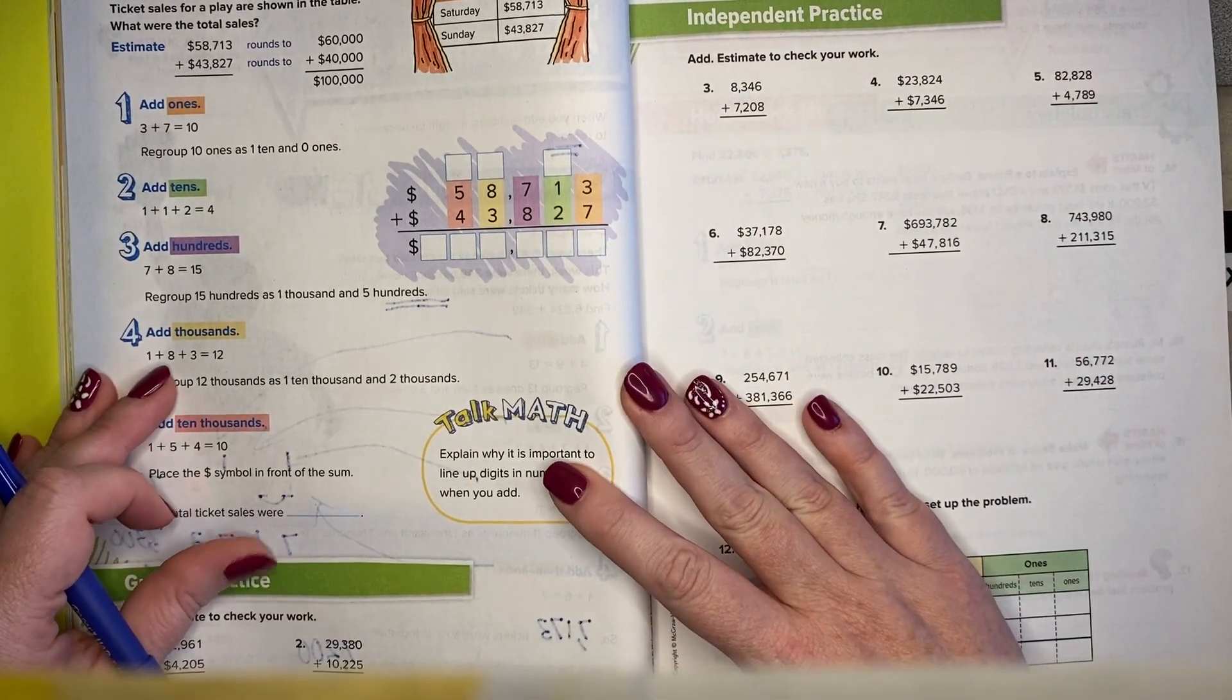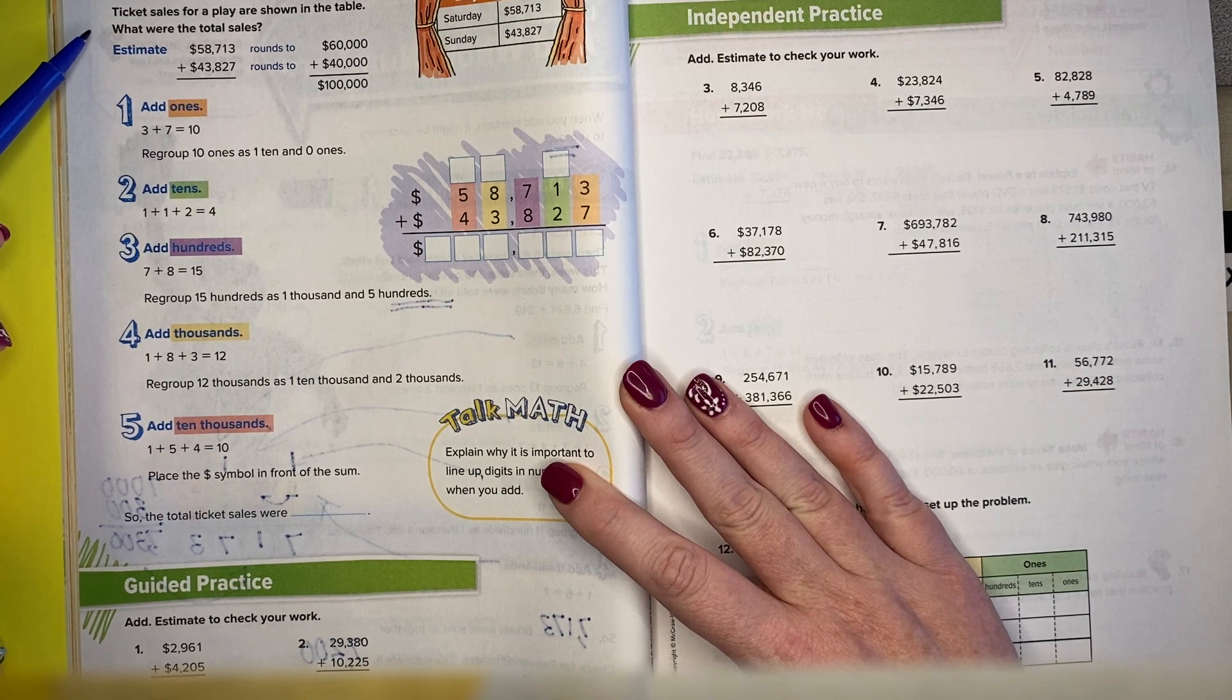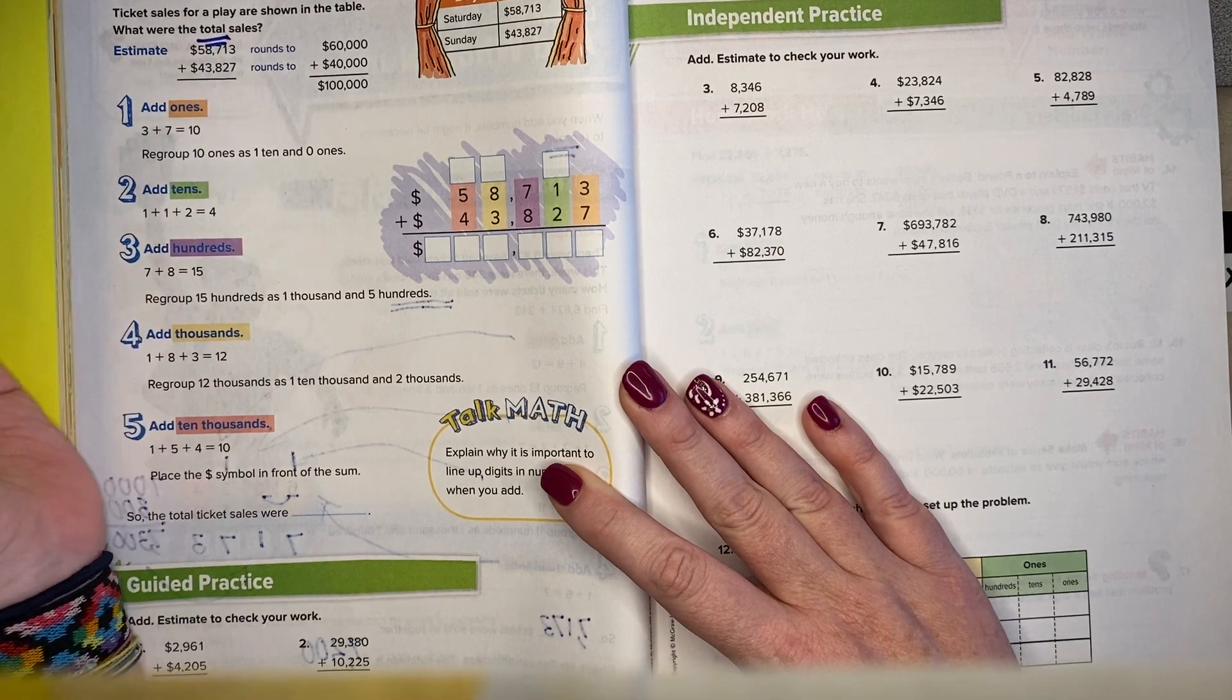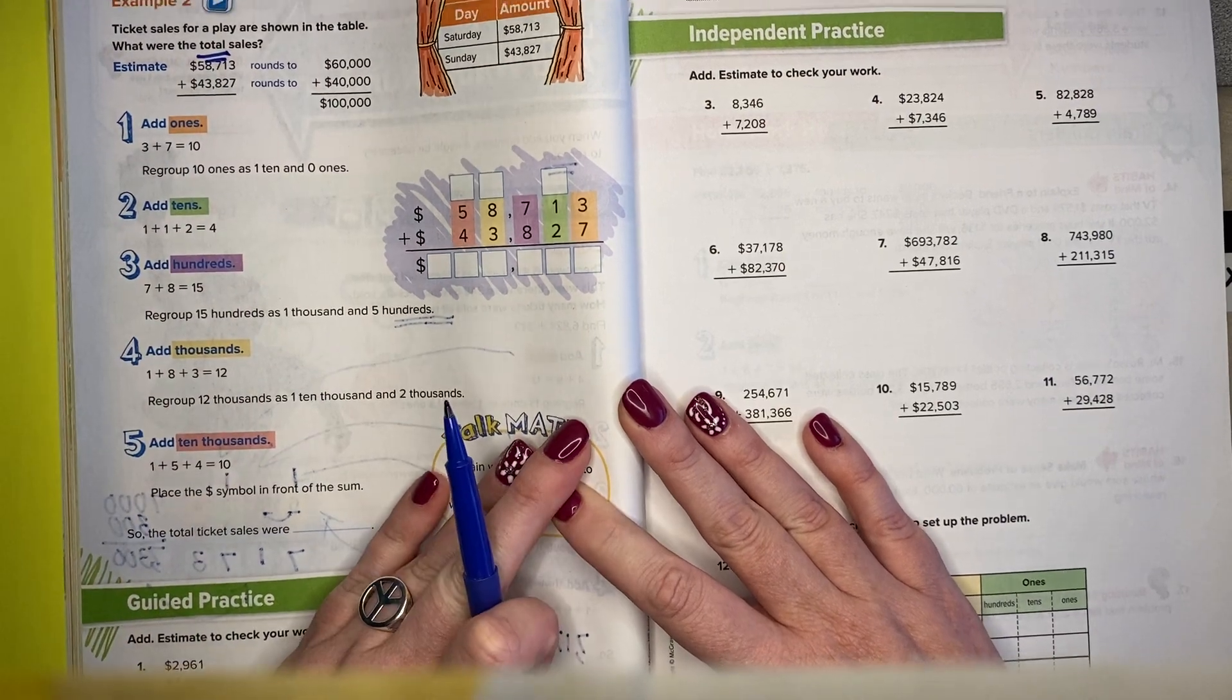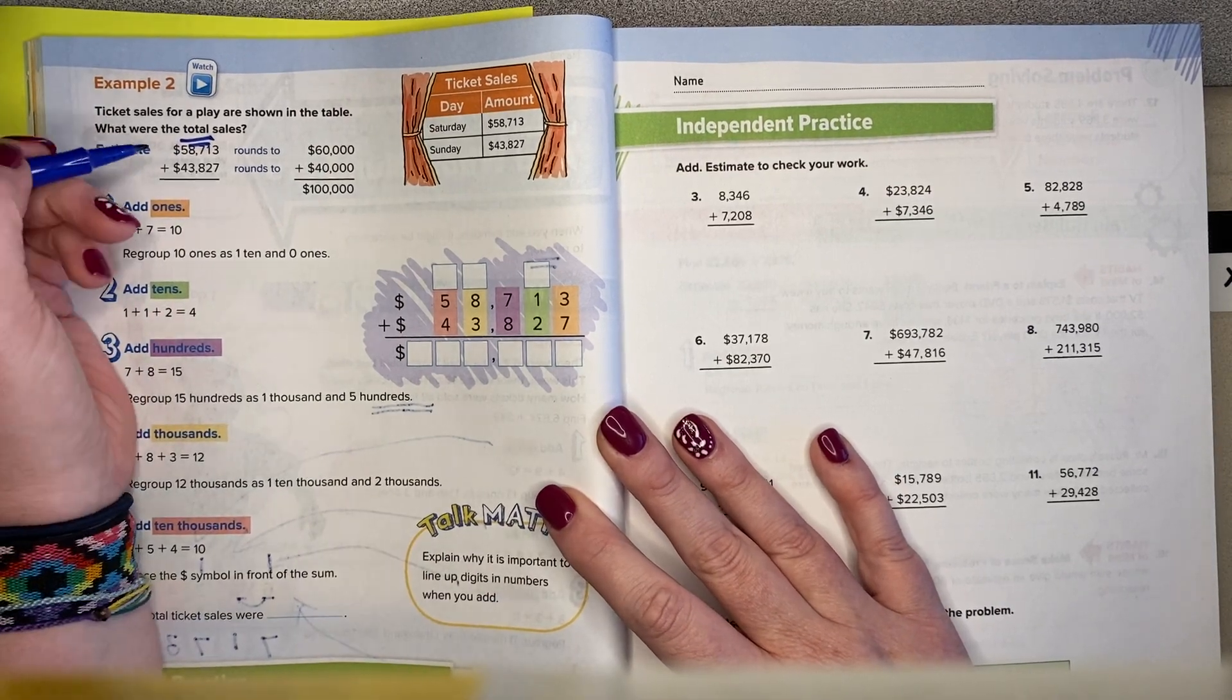Okay, example two. Ticket sales for a play are shown in the table. What were the total sales? Total tells me I want to add. Oh, I better move my book back down now. Total tells me that I want to add.